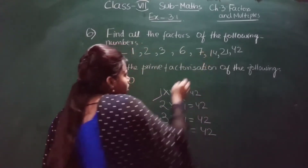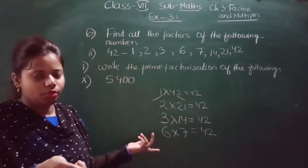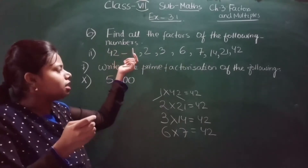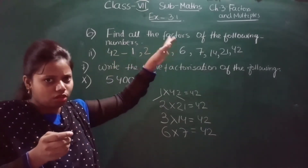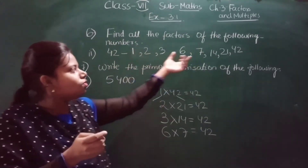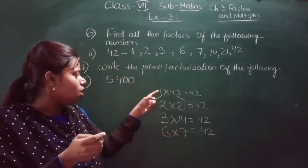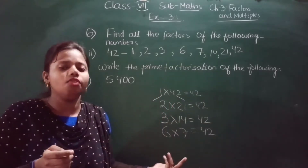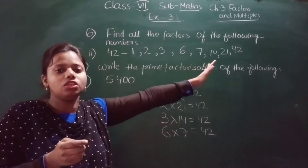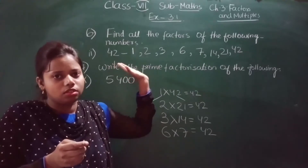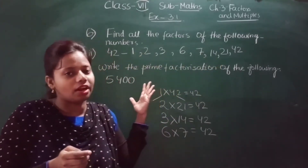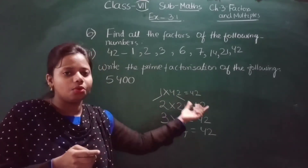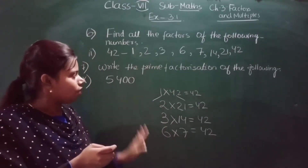Now we have found all the factors easily from both sides, and there are no more factors in between. So all the factors of 42 are: 1, 2, 3, 6, 7, 14, 21, and 42. No other number exists in whose table 42 appears. Writing factors from both sides makes the process very easy.